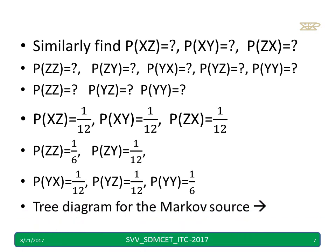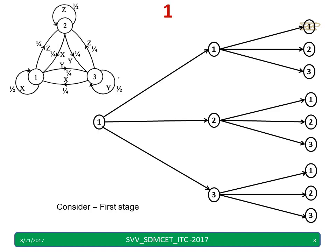Now, how to write a tree diagram for this Markov source. Considering state number 1, there is a chance it may move from 1 to 1, 1 to 2, or 1 to 3 — all three options are in the diagram. If a transition does not exist in the figure, we should not consider it. Similarly, from state 2 there are transitions 2 to 1, 2 to 2, 2 to 3, and from state 3: 3 to 1, 3 to 2, 3 to 3.